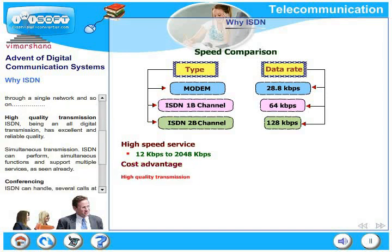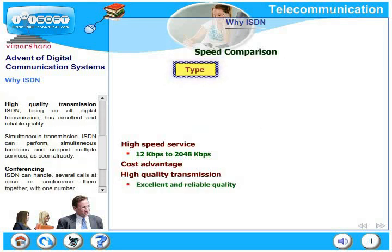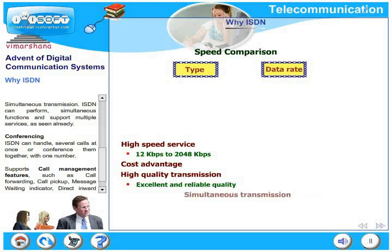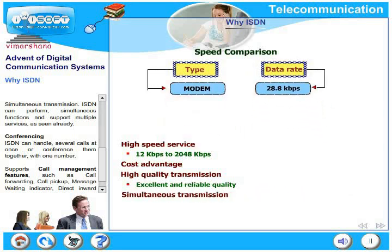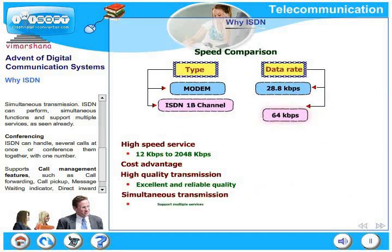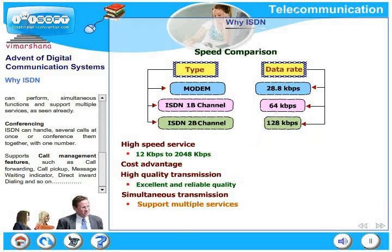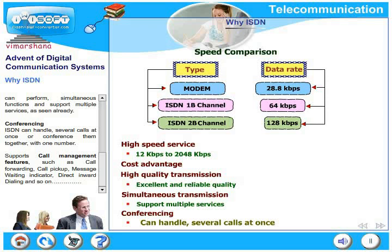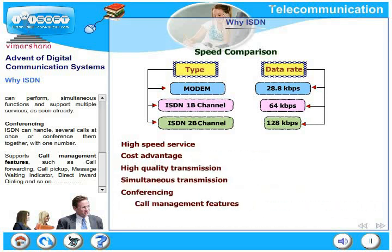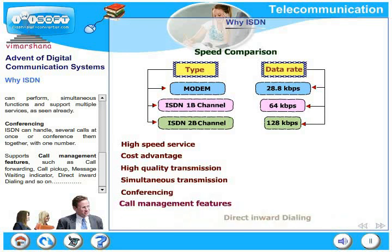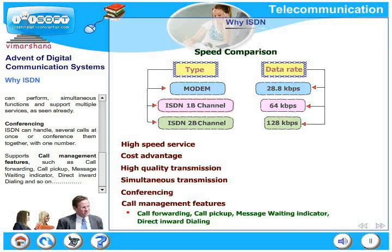ISDN provides high quality transmission. Being an all-digital transmission, it has excellent and reliable quality. Simultaneous transmission is also possible — ISDN can perform simultaneous functions and support multiple services at the same time. Conferencing is another important feature; ISDN can handle several calls at once or conference them together with just one number. ISDN also supports call management features such as call forwarding, call pickup, message waiting indicator, and direct inward dialing.